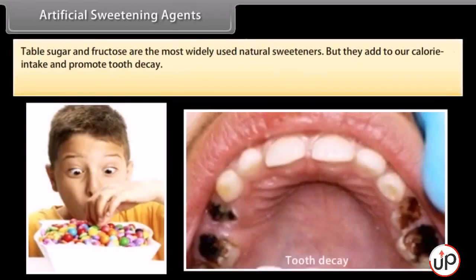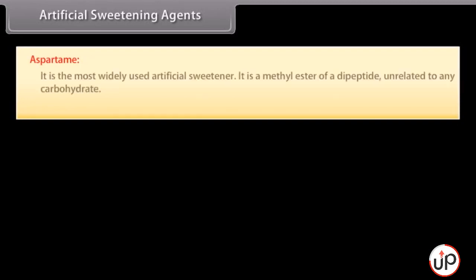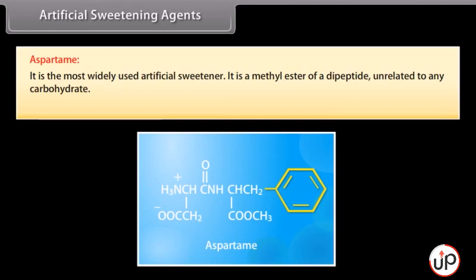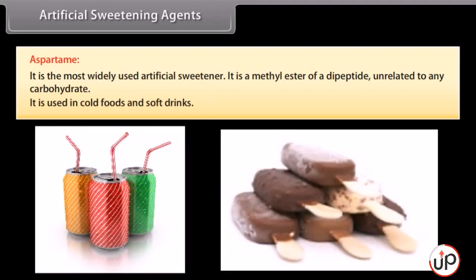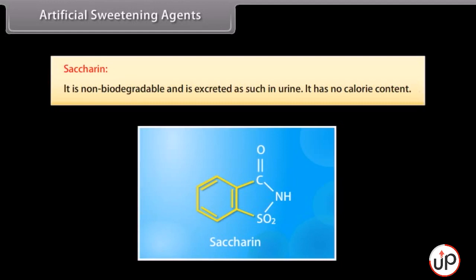Artificial sweetening agents. Sweetness is a matter of taste, but almost everyone has a craving for sweets. Table sugar and fructose are the most widely used natural sweeteners, but they add to our calorie intake and promote tooth decay. Artificial sweeteners are sweeter than sugar and they are low-calorie or non-nutritive sweeteners. Aspartame is the most widely used artificial sweetener — it is a methyl ester of a dipeptide unrelated to any carbohydrate, used in cold foods and soft drinks. It is non-biodegradable, excreted as such in urine, has no calorie content, and has proved to be a life saver for diabetics and those who need to control calorie intake.